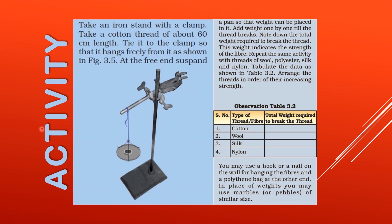Let us do one activity to find which fiber is stronger. Page number 34, Activity 3.1: Take an iron stand with a clamp. Take a cotton thread of about 60 centimeters length and tie it to the clamp so that it hangs freely. At the free end, suspend a pan so that weights can be placed in it. Add weights one by one until the thread breaks. Note down the total weight required to break the thread — this weight indicates the strength of the fiber.